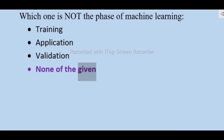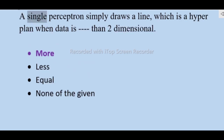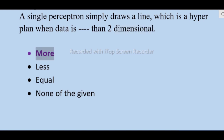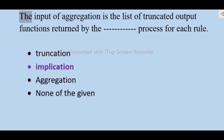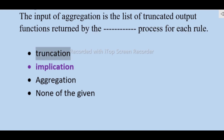A single perceptron simply draws a line which is a hyperplane when data is more than two-dimensional — not less, equal, none of the given. The input of aggregation is the list of truncated output functions returned by the implication process for each rule — not truncation, aggregation, none of the given.